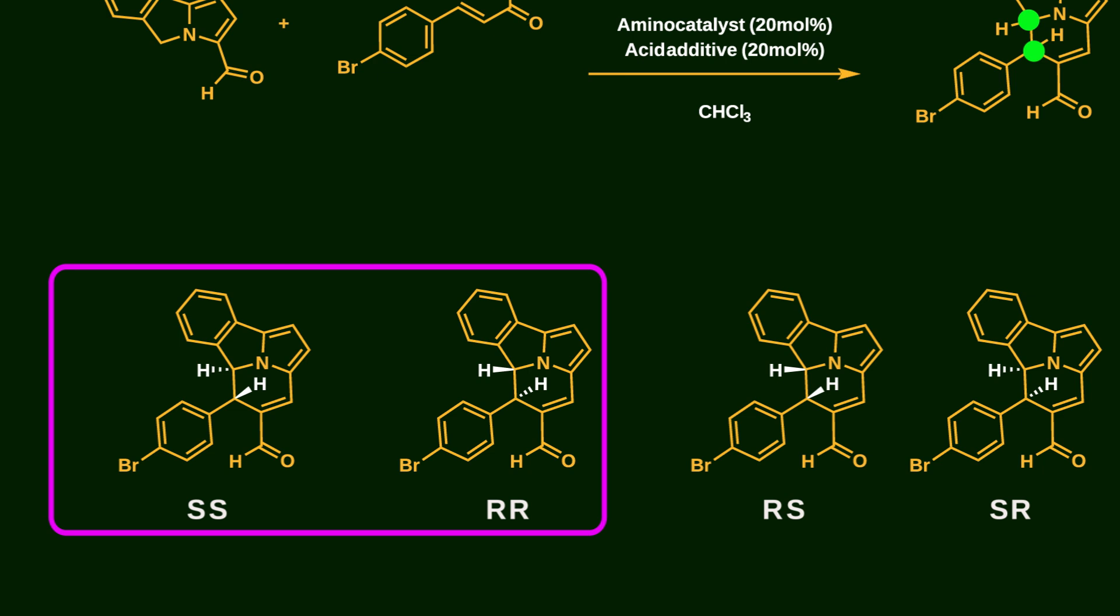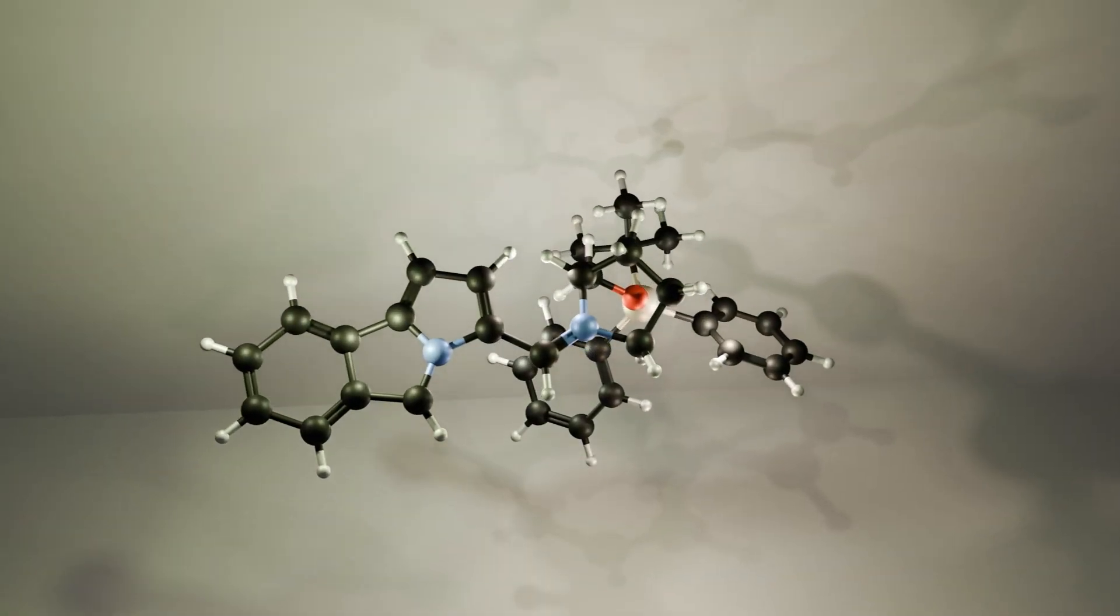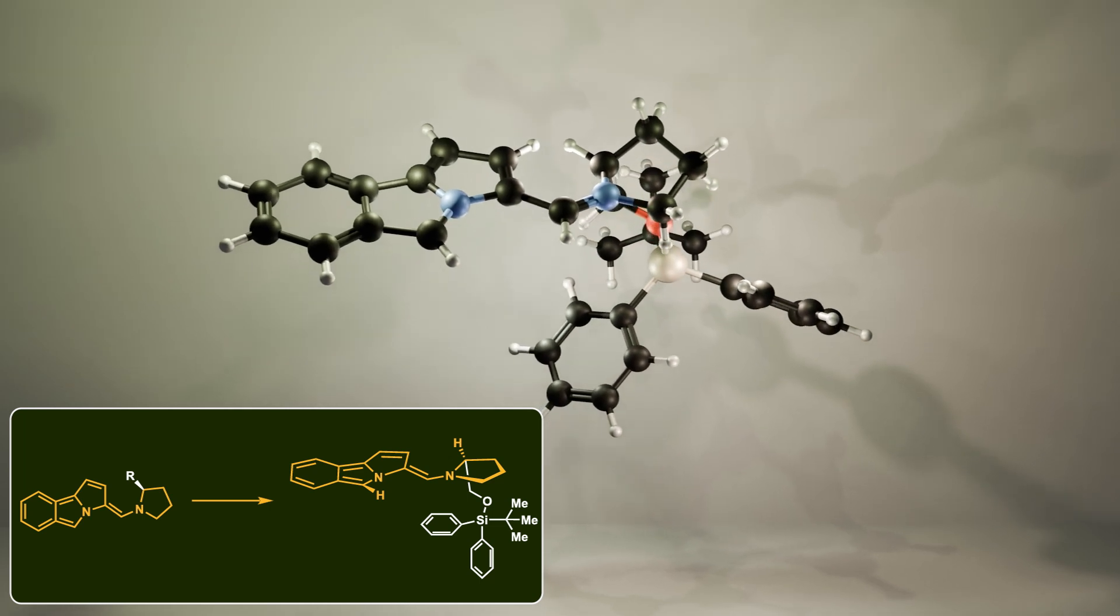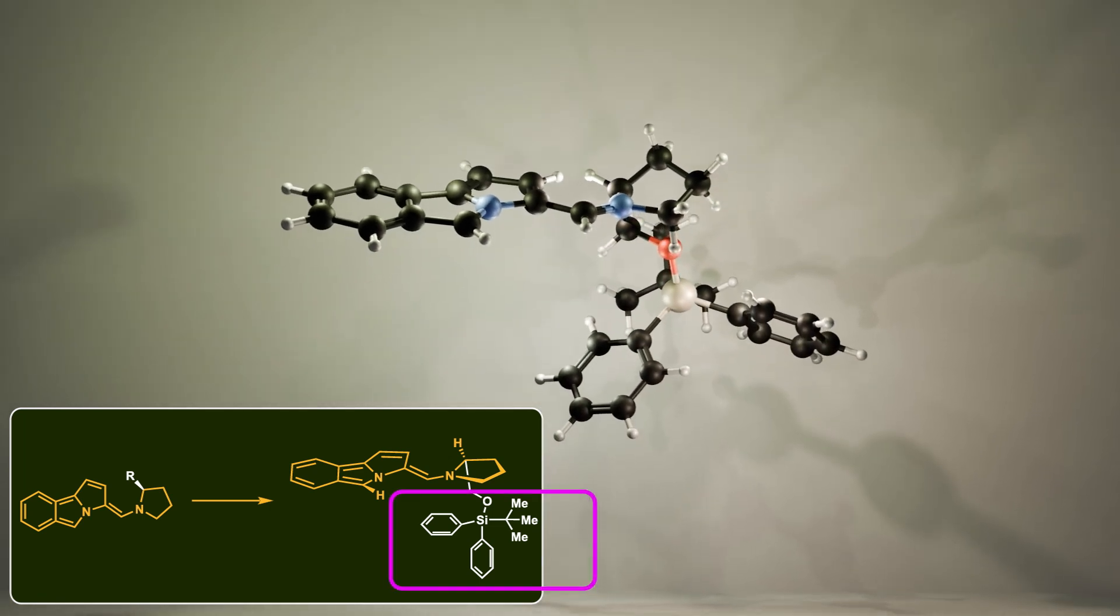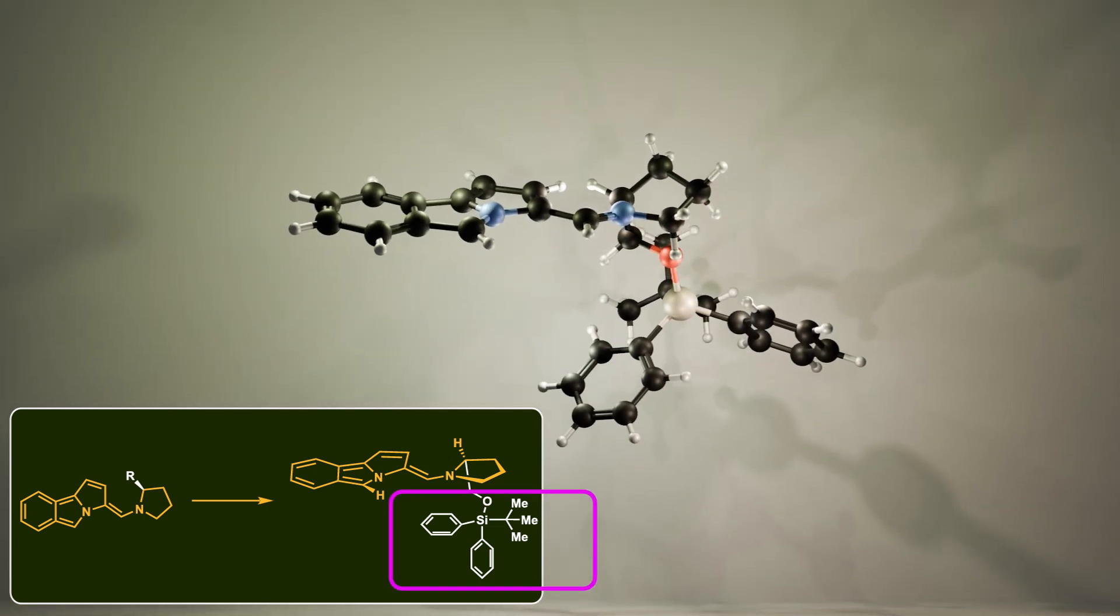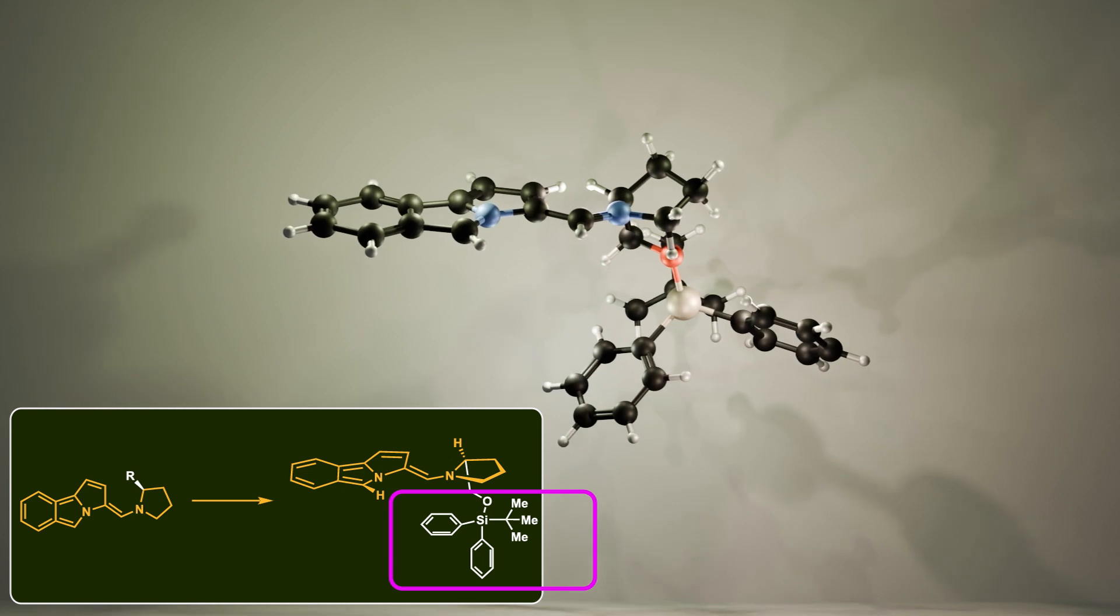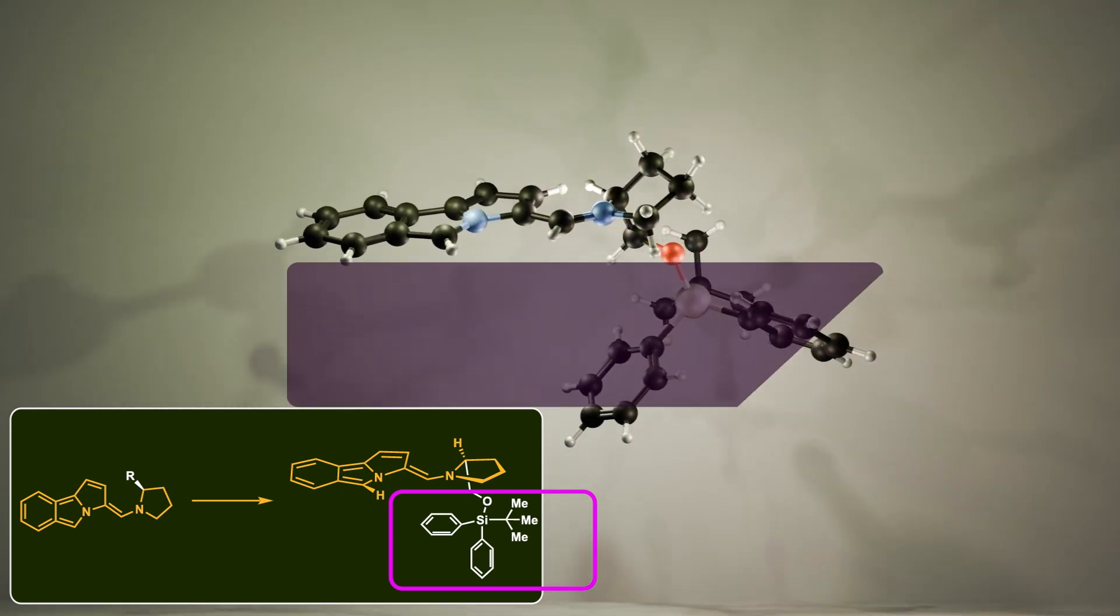Here, I'm going to break down the reason behind this stereoselectivity. In this reaction, the choice of the R group in the organocatalyst plays a crucial role in stereoselectivity by shielding one face of the 12π component. In other words, chirality is induced by the steric hindrance of the bulky substituents.